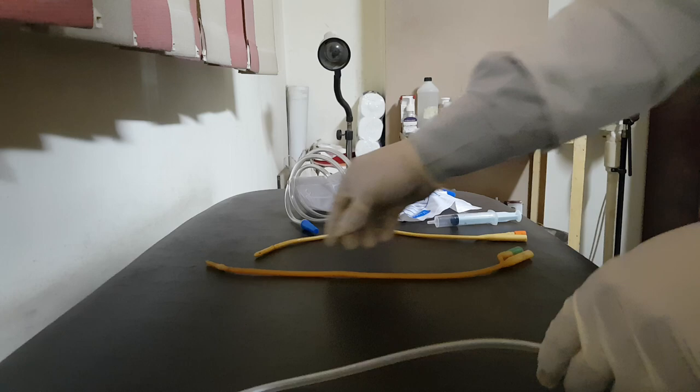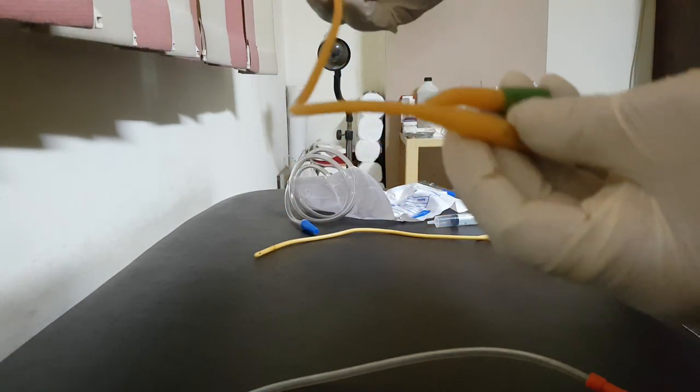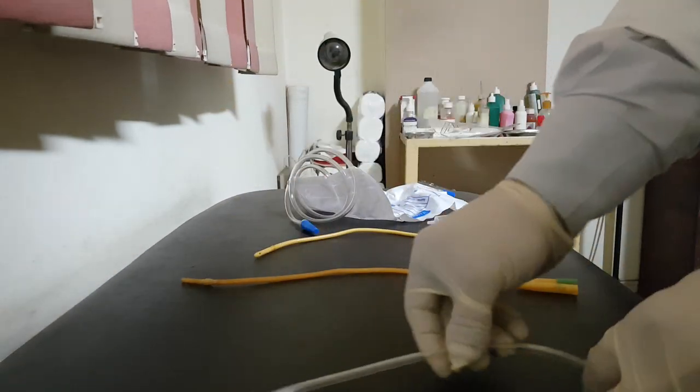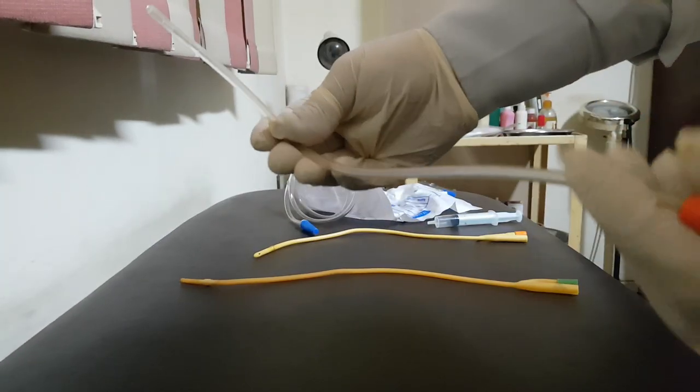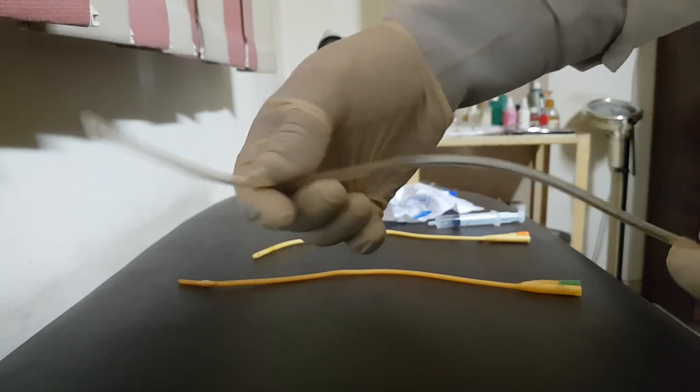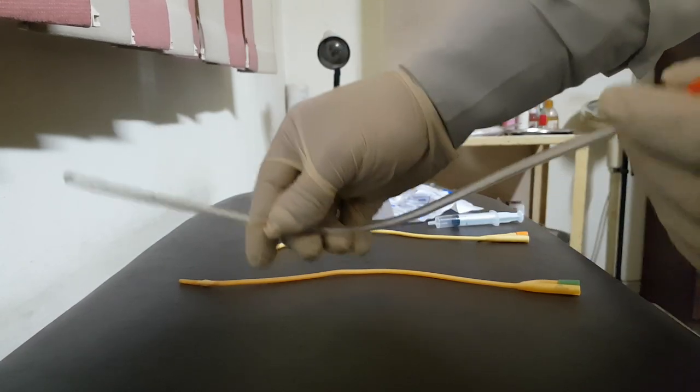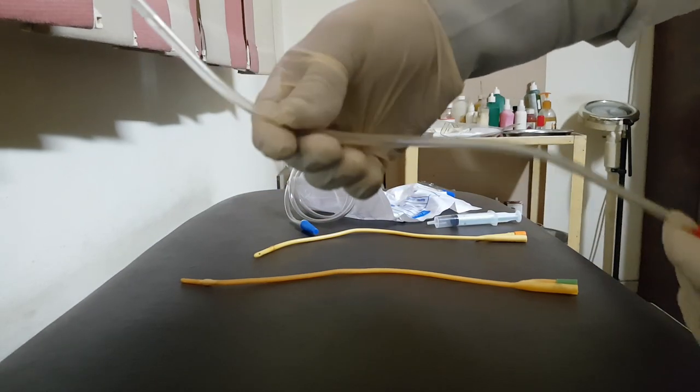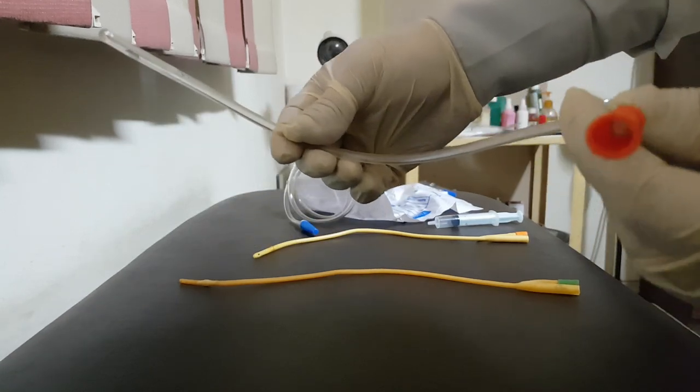Another example of indwelling catheter is Foley catheter, this one, of different sizes of course. The use of intermittent catheter is to evacuate the bladder, can be used by the healthcare provider and also the patient, if trained, can do it at home. So the aim of Nelaton catheter is to evacuate the bladder in case of retention of urine.